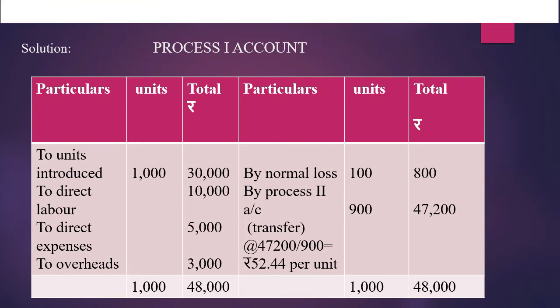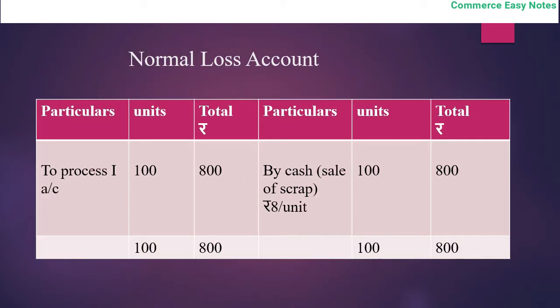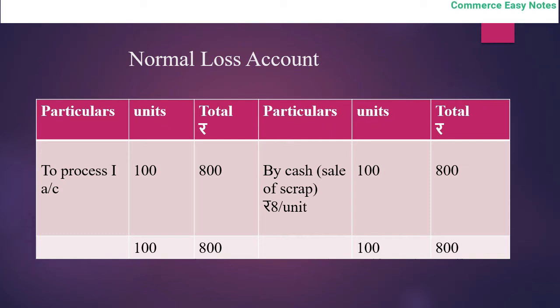The normal loss account is prepared with debit and credit sides. On the debit side, process 1 account is debited with 100 units at Rs. 800. On the credit side, since there is scrap value, cash account is credited with Rs. 8 per unit for 100 units = Rs. 800. This closes the normal loss account.